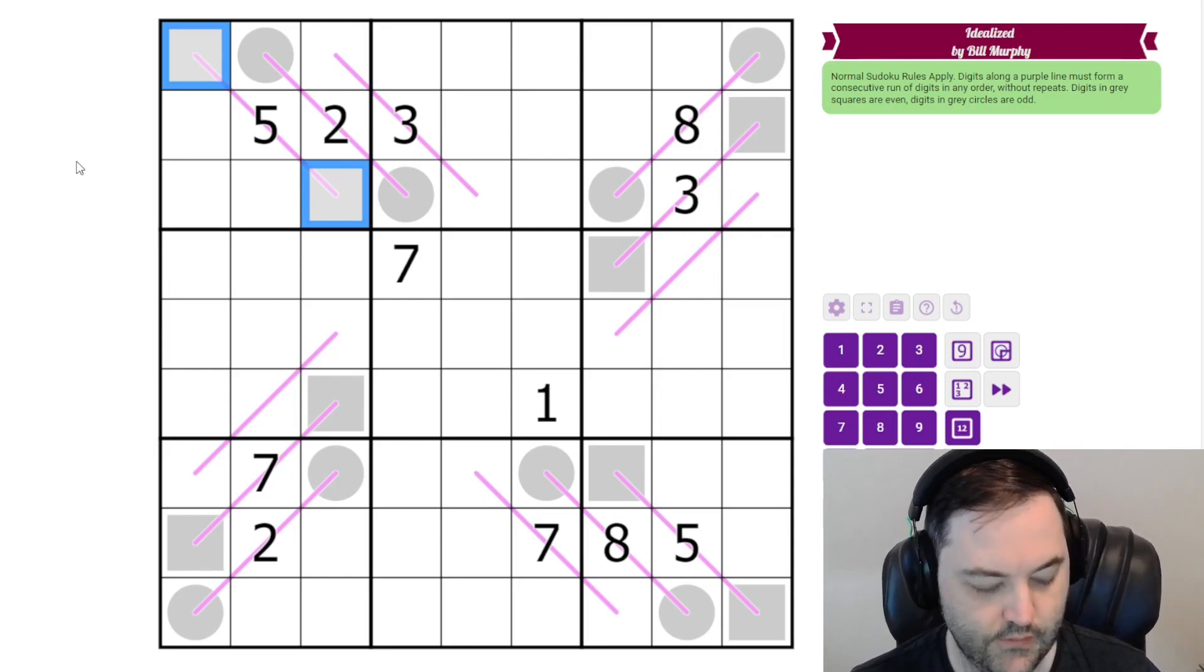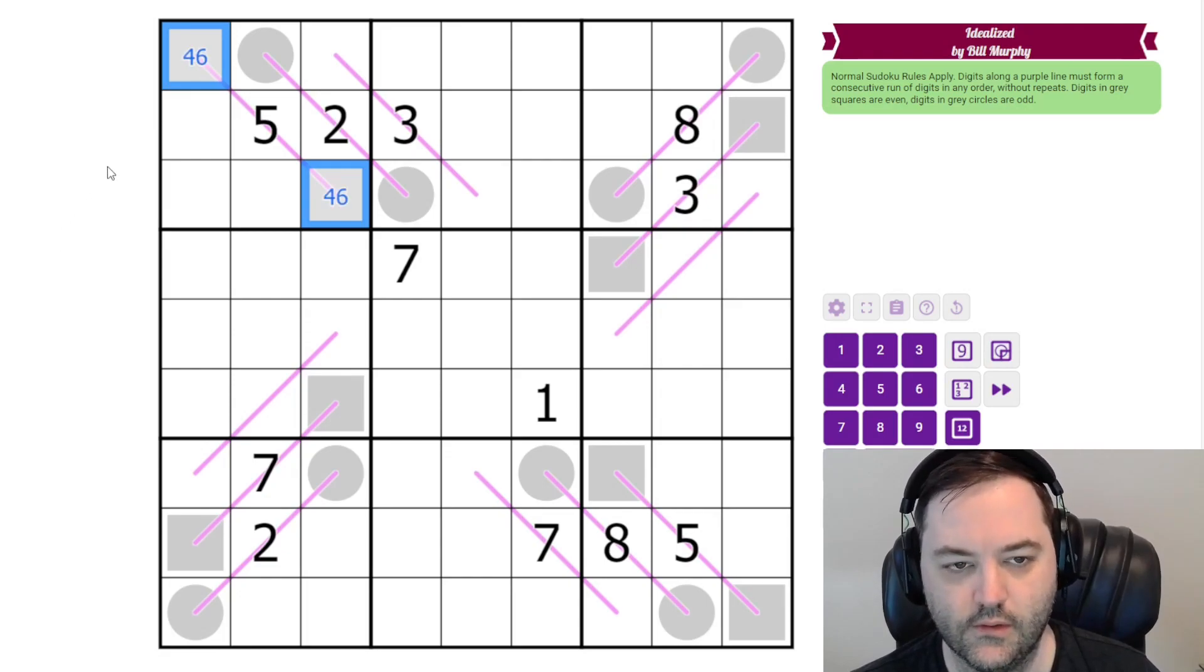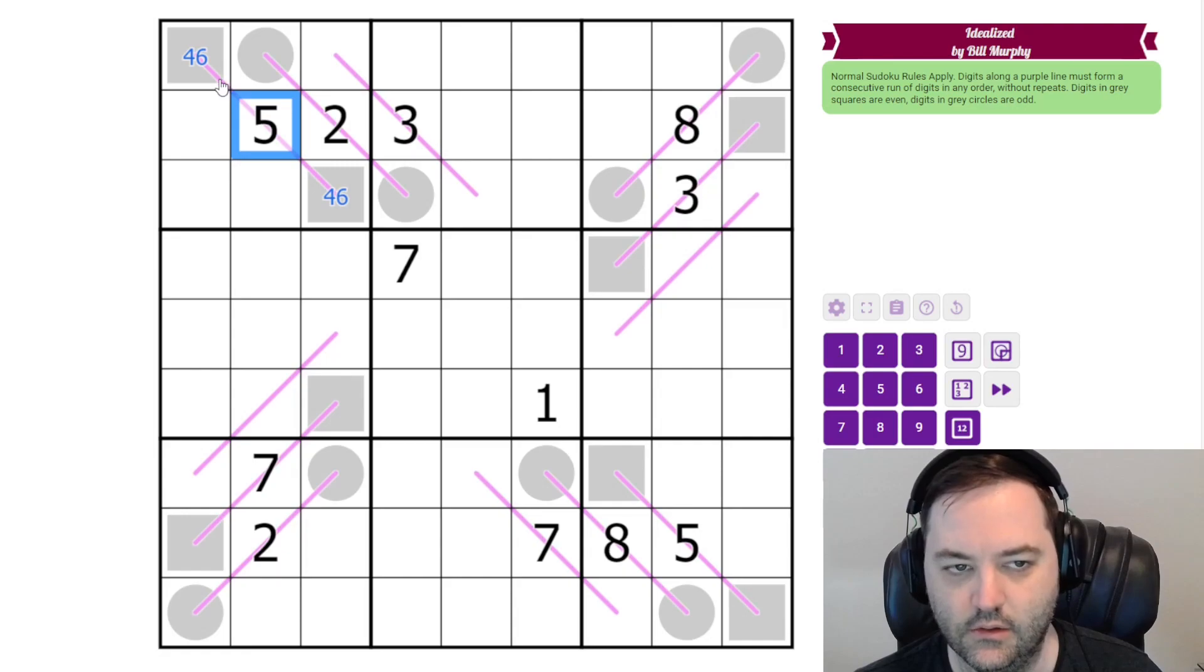But we'll start with the Rinban lines that have given digits and they have squares or circles. So five needs to be part of a set of three consecutive digits with two even digits. The only two digits those can be are four and six. If we tried to put an eight, we can't do five, six, seven, eight, because that's four digits.